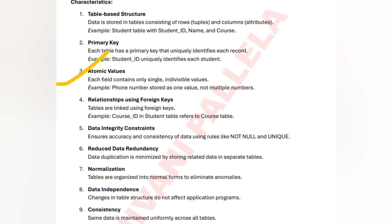Next is atomic values. Atomic values contain single and indivisible values. For example, phone numbers — whatever you are storing will be a unique number. Your hall ticket number is a unique number. That is called an atomic value.